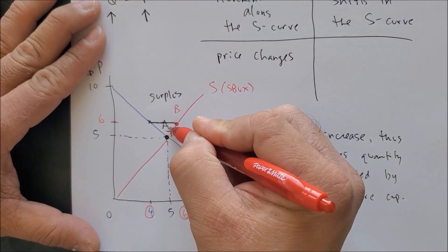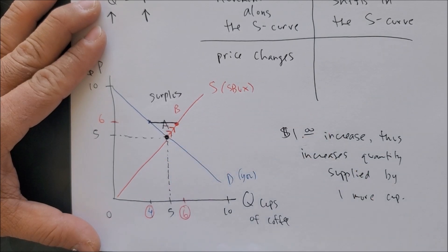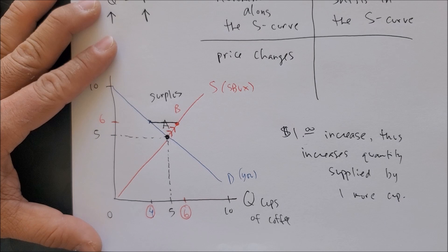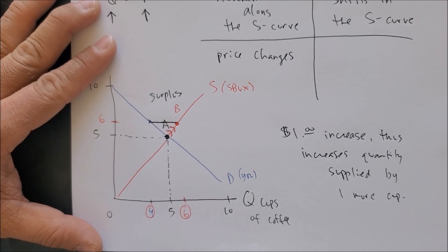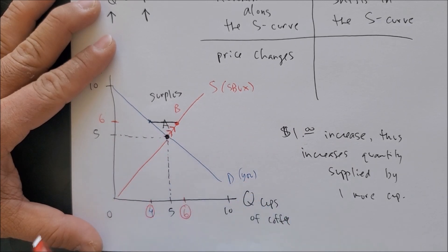This movement along the supply curve is going to cause a market failure, specifically a surplus in the economy. The only way for this to go back to its market equilibrium is for the price of the good to decrease back to five dollars.